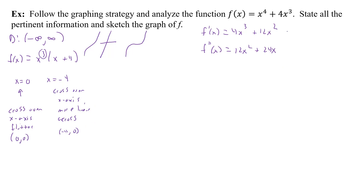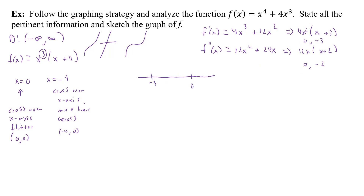Now factoring f'(x) = 4x³ + 12x²: factor out 4x² to get 4x²(x + 3), giving critical/partition numbers x = 0 and x = -3. For f''(x) = 12x² + 24x: factor out 12x to get 12x(x + 2), giving partition numbers x = 0 and x = -2. We now set up two sign charts.